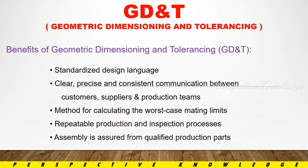The benefits of GD&T: it is a standardized language that provides clear, precise, and consistent communication between customers, suppliers, and the production team. It is a method for calculating the worst-case mating limits, ensuring a repeatable production and inspection process, so that assembly is assured from qualified production.